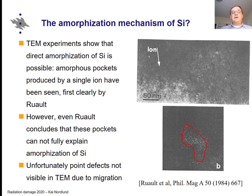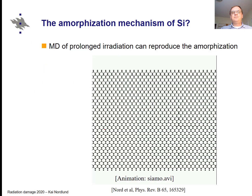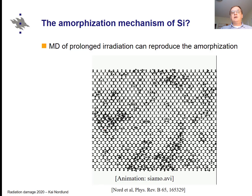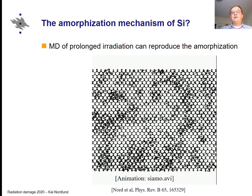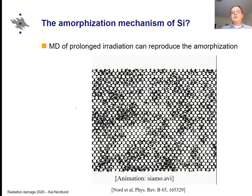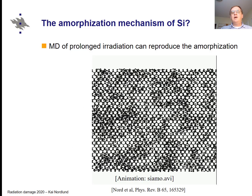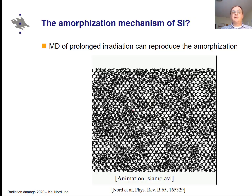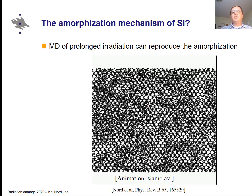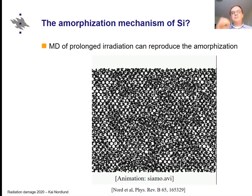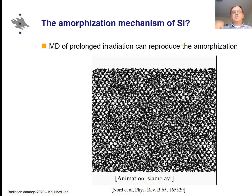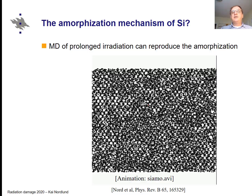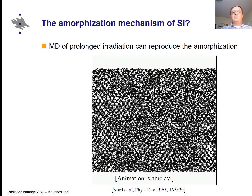Point defects are practically impossible to see in TEM due to their mobility — they move away before you can see them. One can simulate this: with molecular dynamics you can reproduce the amorphization, and this particular simulation agreed within about a factor of two with experimental amorphization doses. Even though molecular dynamics does not have long-range defect migration, it was actually a pretty good result.